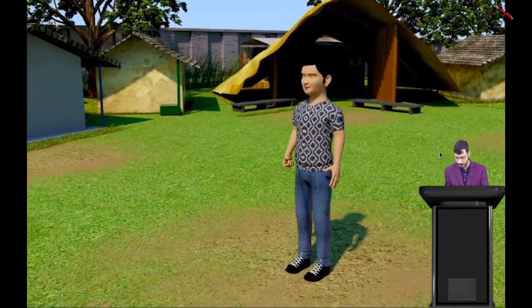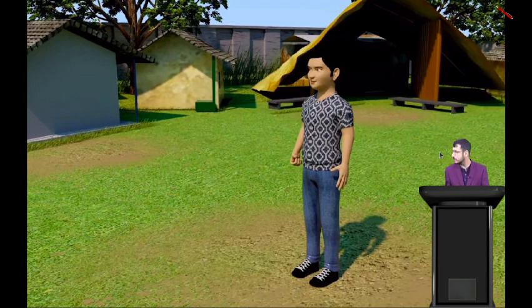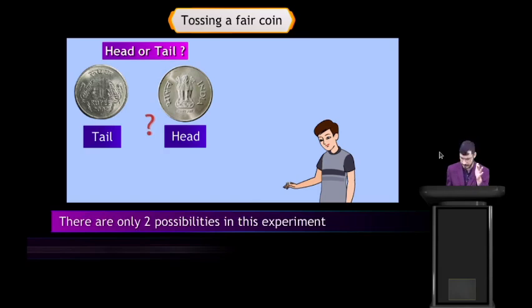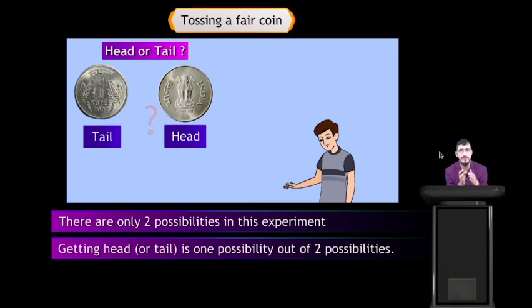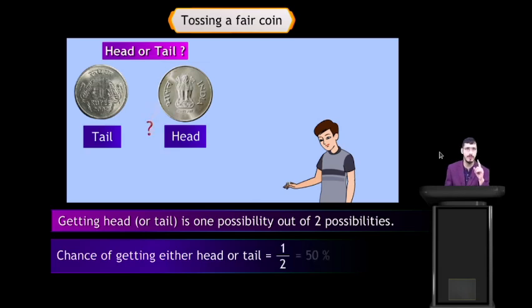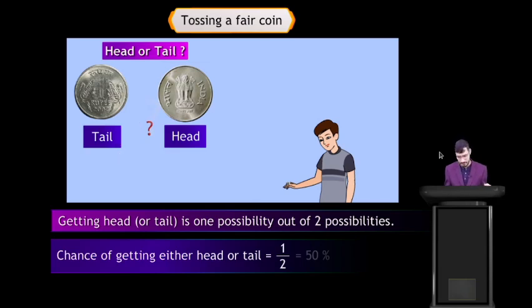Tossing a coin — there are 2 possibilities: head and tail. Getting head or tail is 1 possibility out of 2, so the probability of getting either head or tail is 1 by 2 — that is 50 percent.